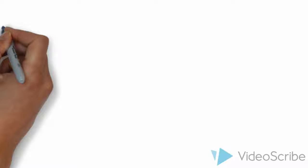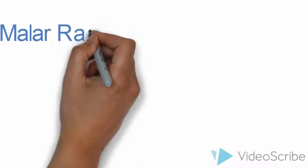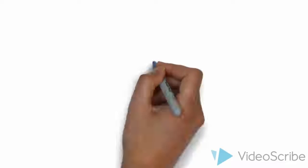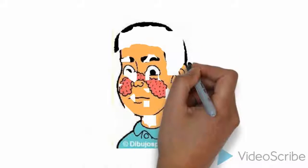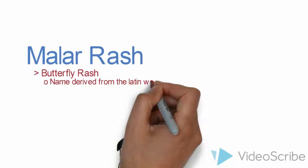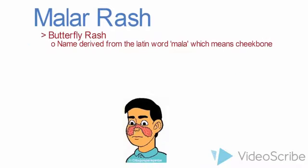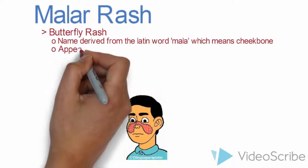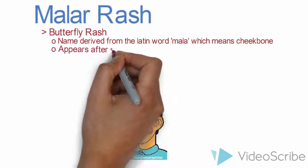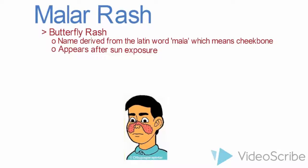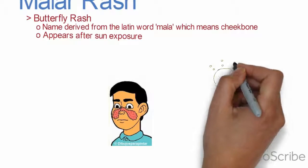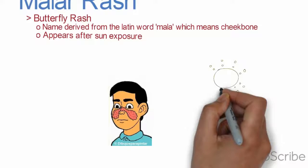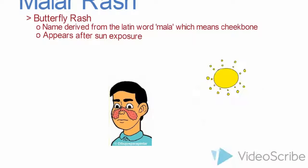What are the symptoms of lupus? One of the major symptoms of lupus is called the malar rash. It usually appears at the bridge of the nose, under the cheekbone, and it looks like a butterfly — so it got the name butterfly rash. The name is derived from the Latin word mala, which means cheekbone, and it appears after sun exposure. UV radiation plays a huge role in the symptoms of lupus.